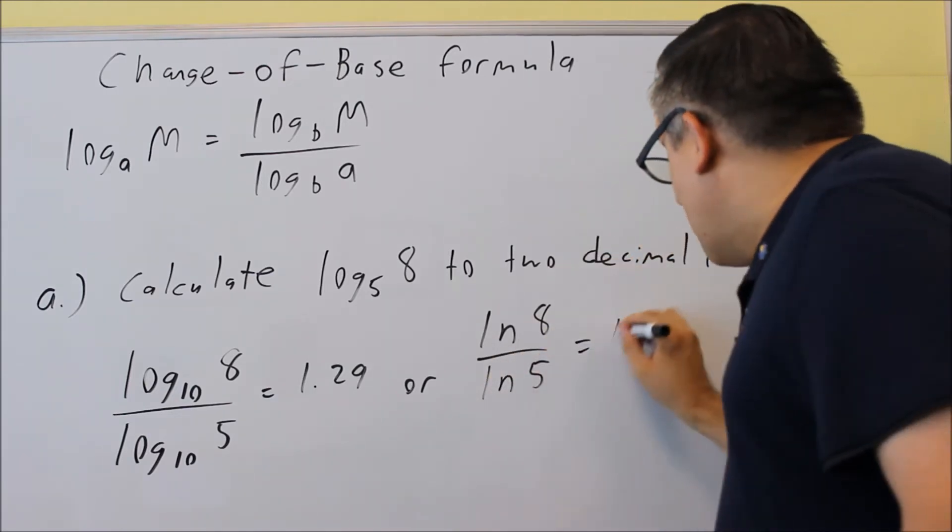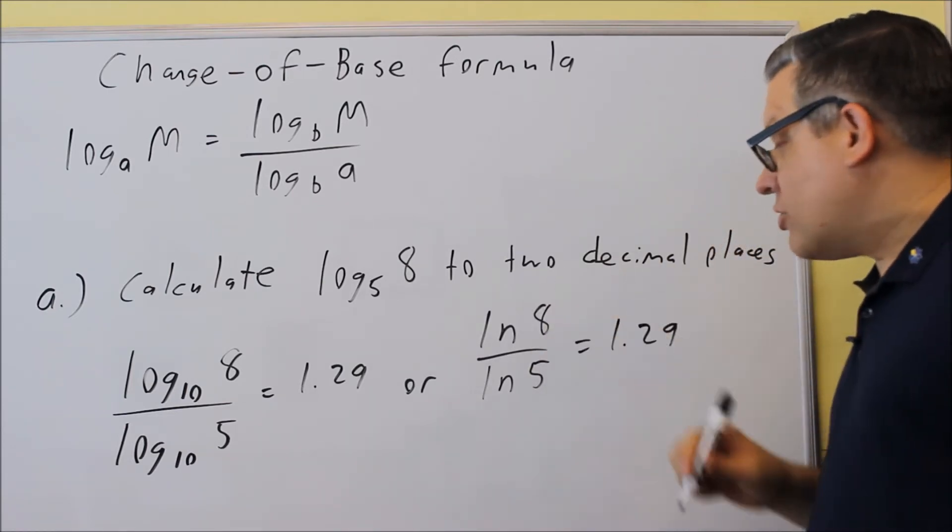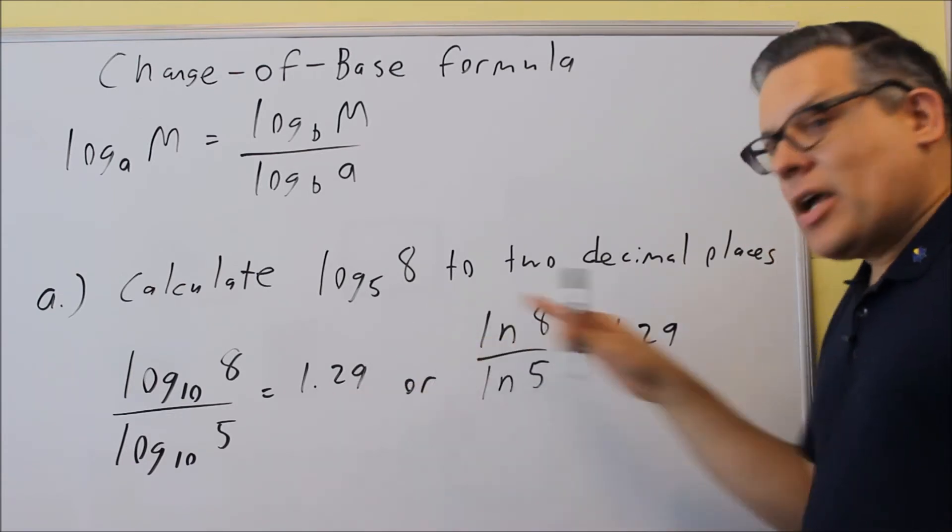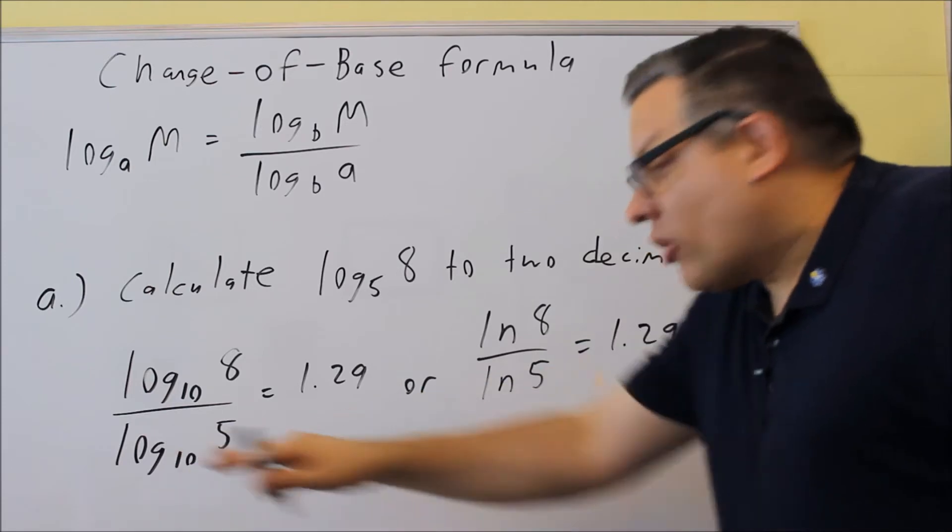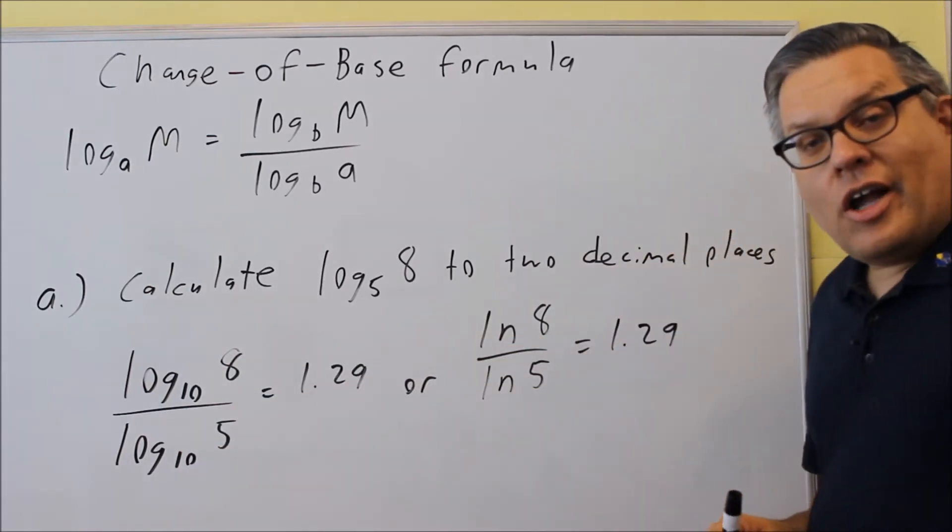Now if I put that into the calculator, I'm still going to get 1.29 for that one, and that would be rounded to two decimal places. So either one of these I can do. Now you can't mix and match. You can't do LOG and LN or something like that. They have to be all LOG or all LN when you do that.